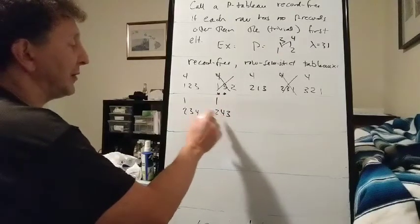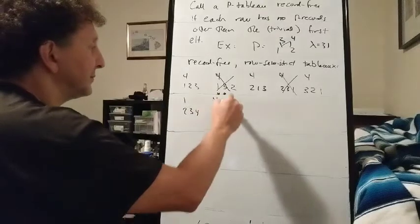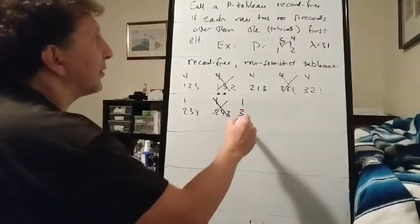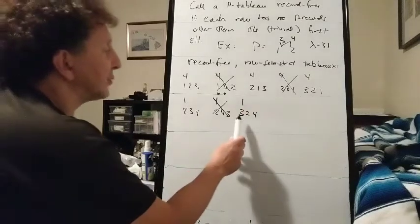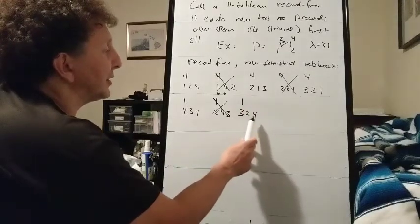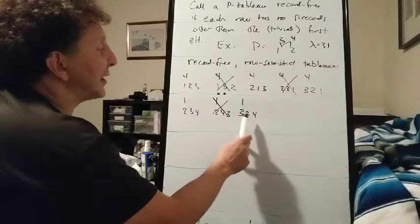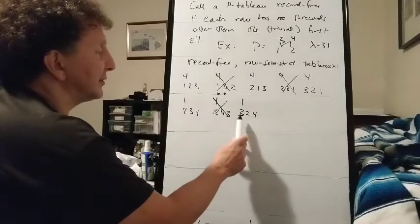2, 4. Oh, 4 is a record because 4 is greater than everything that came before it. 3, 2, 4 is legal because we're never going down in the poset. And 4 is not greater than 3, so 3 is the only record.